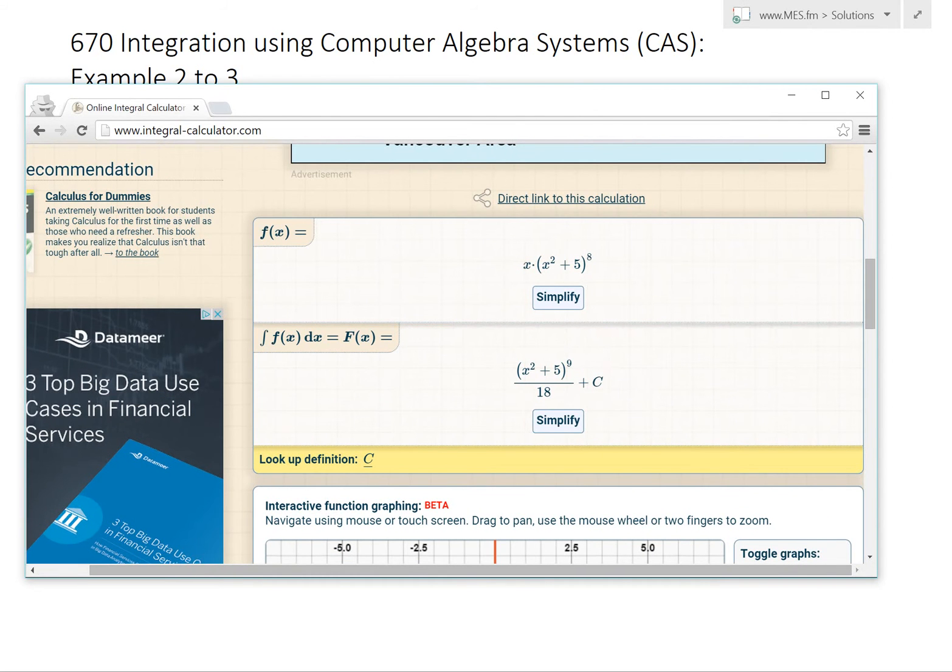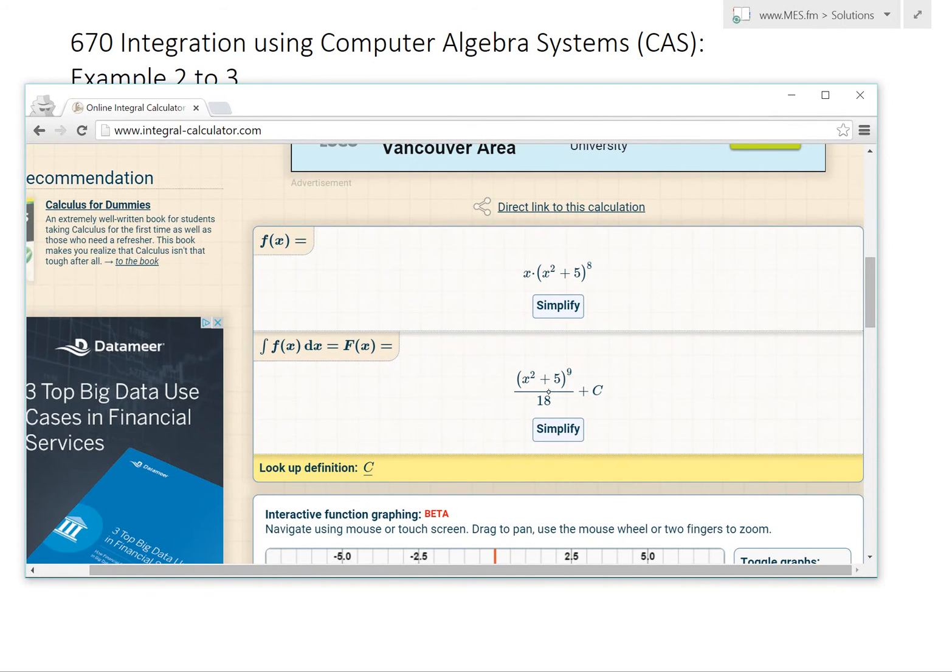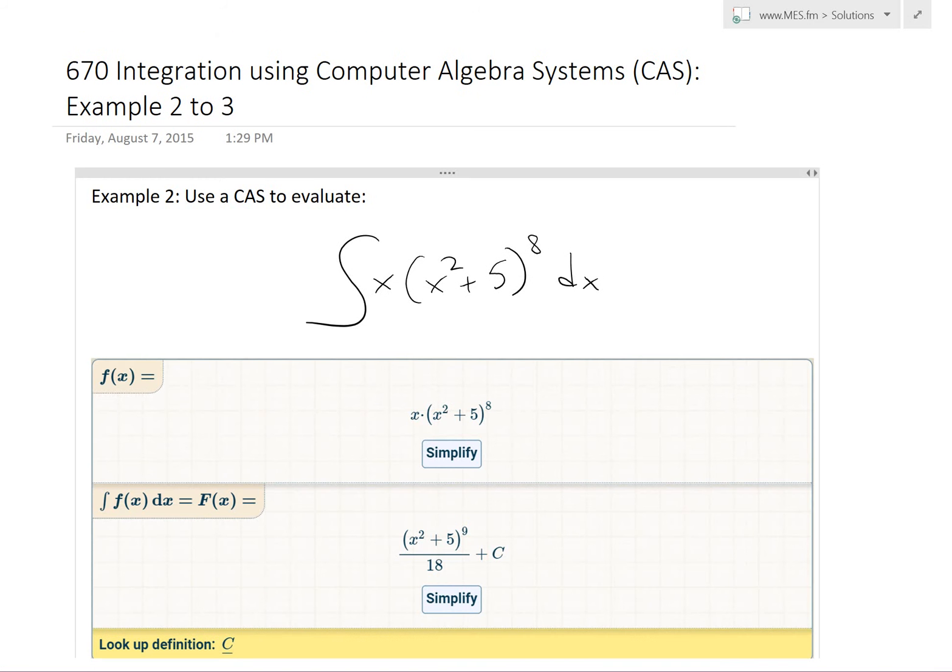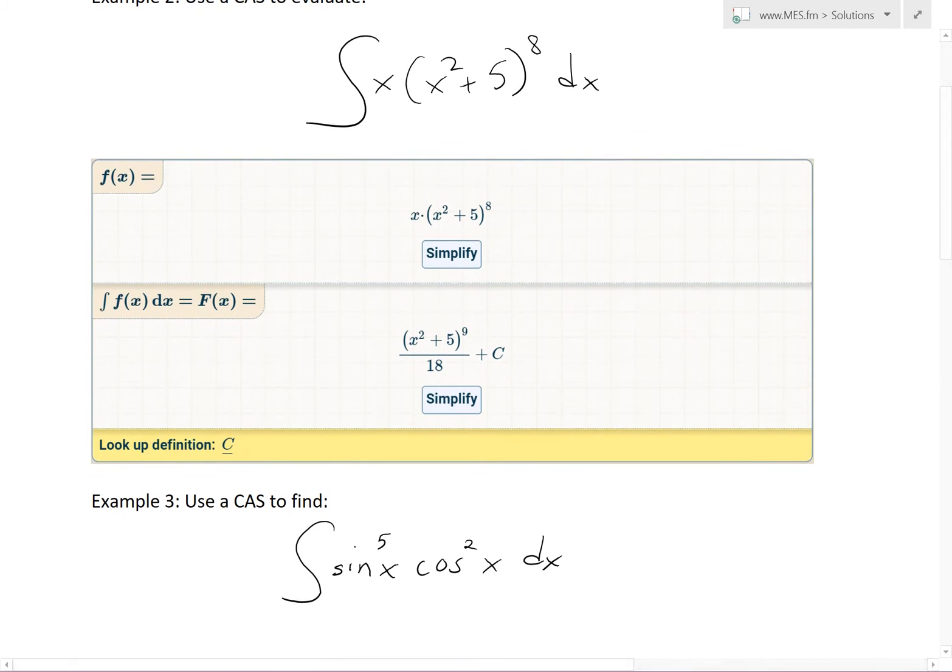And there is our answer right here. That's just pretty quick. x squared plus 5, power of 9, divided by 18 plus c. Sometimes if the CAS they're using isn't too good, it will actually expand this out. But lately, all the online CASs are pretty good. So they'll simplify it quickly like this. If I copy and paste that result, we get basically this is the integral right here.